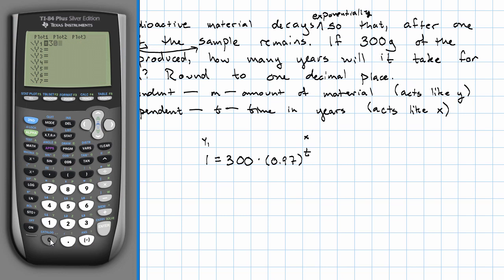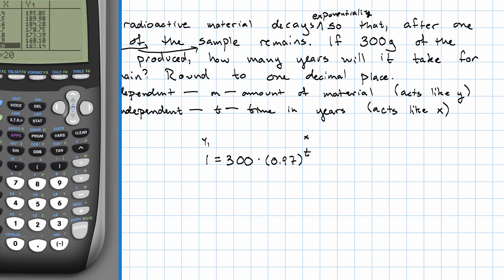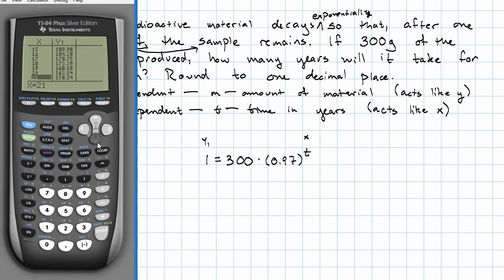I'm going to go straight to the table in our calculator. We'll say 300 times 0.97 to the x. Look at the table. And I see that y seems to be getting smaller pretty slowly. I'm going to have to scroll down a long way in order to get all the way down to y is 1. And even after that, I want to get to one decimal place.